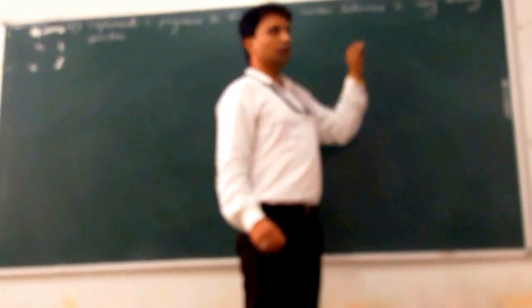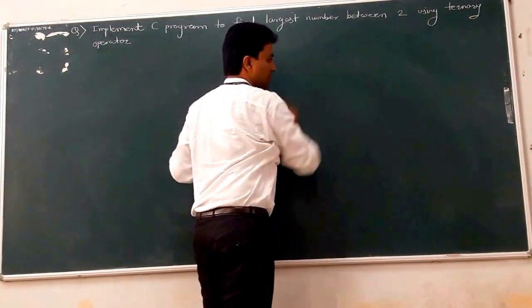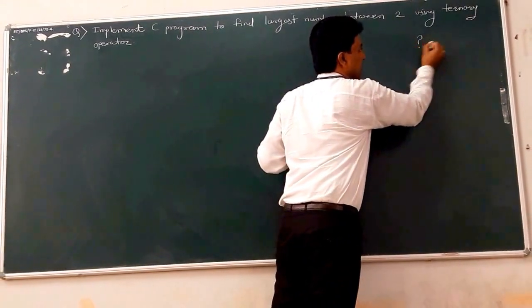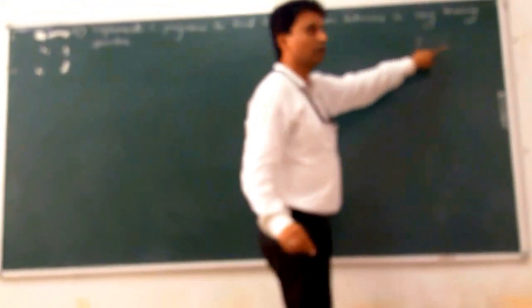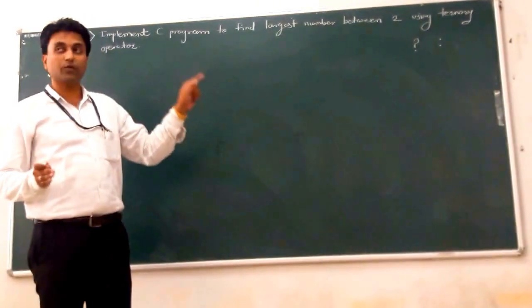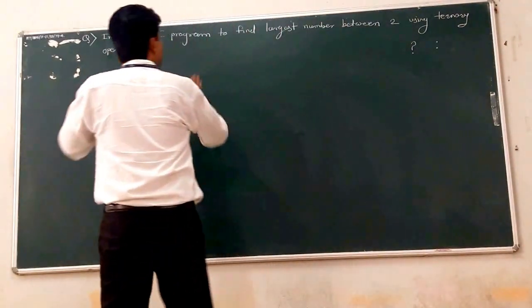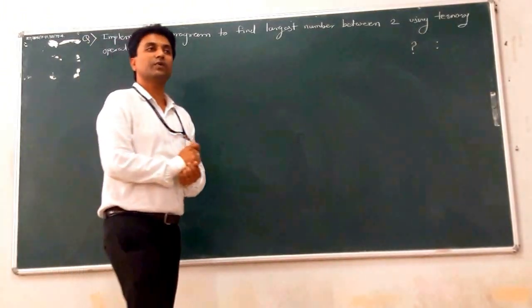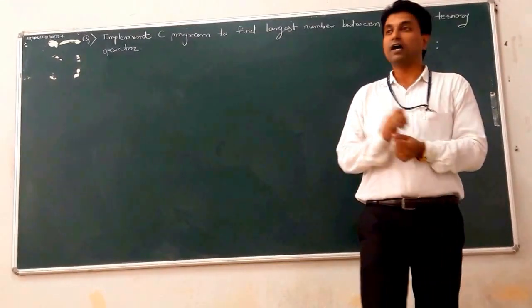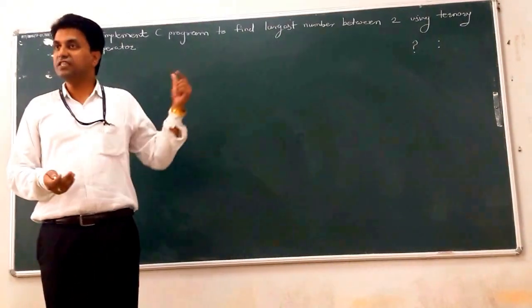The program here implements a C program to find the largest number between two using the ternary or tertiary operator. The ternary operator is represented by question mark and colon — that is the operator notation. We have to find the largest number between two, so first we take two numbers from the user using printf and scanf statements, then use the ternary operator to find which one is the largest.